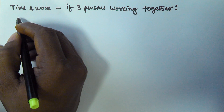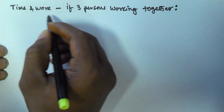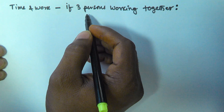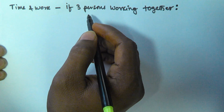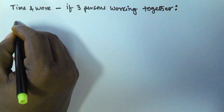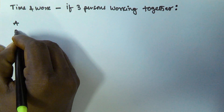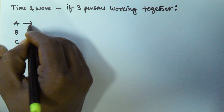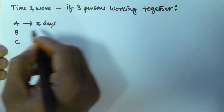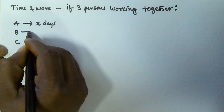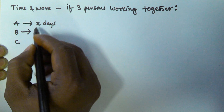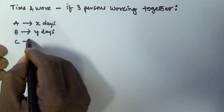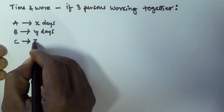Hello friends. In this video we will see if three persons are working together, how many days they will take to finish the work. Let us assume there are three persons A, B, and C. A takes X days to finish the work, B takes Y days to finish the same task, and C takes Z days to finish the same task.